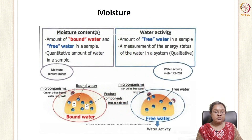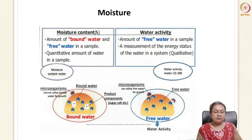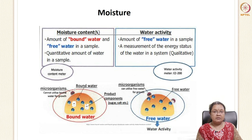Moisture is a very important component and it is the main reason why food gets spoiled. It is always necessary that moisture needs to be removed or arrested so that microorganisms will not survive and multiply. It can be measured as moisture content or water activity. Moisture content is a quantitative amount of water, whereas water activity is a qualitative value. Moisture content gives an idea about bound water and free water.